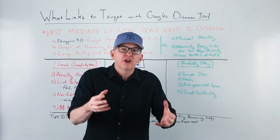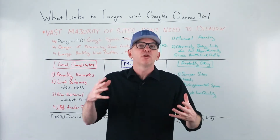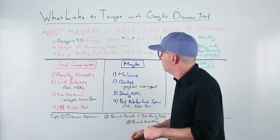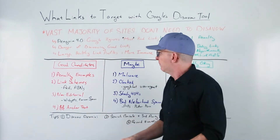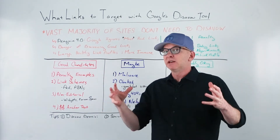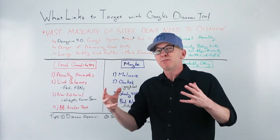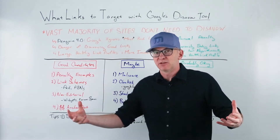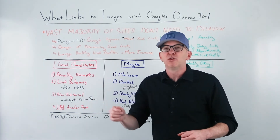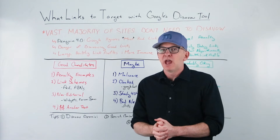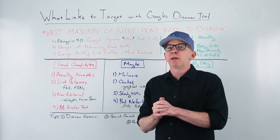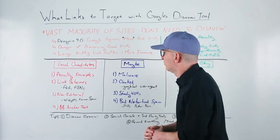A big question people have is: what should I disavow? The best examples are often what Google will give you when they penalize you. When you get a link penalty, Google will often provide sample links. They don't tell you all the links to disavow, but they'll give you samples and you can look for patterns to see what Google is considering a spammy link. You definitely want to include those in your disavow file.